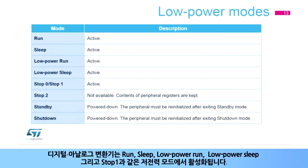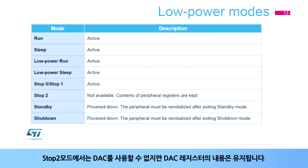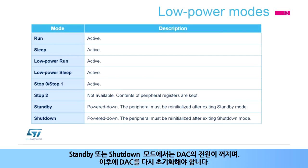The digital to analog converter is active in the following low power modes: Run, Sleep, Low Power Run, Low Power Sleep, Stop Zero, and Stop One. In Stop Two mode, the DAC is not available, but the content of its registers is kept. In Standby or Shutdown modes, the DAC is powered down and it must be re-initialized afterwards.